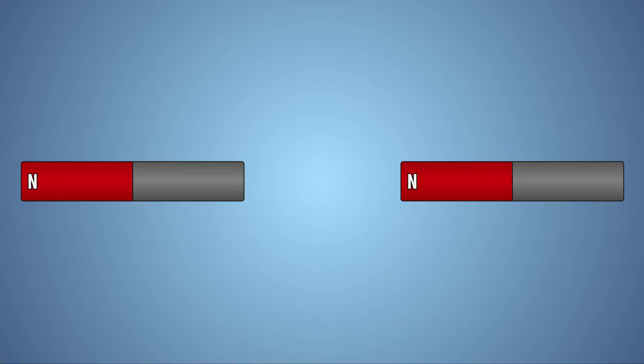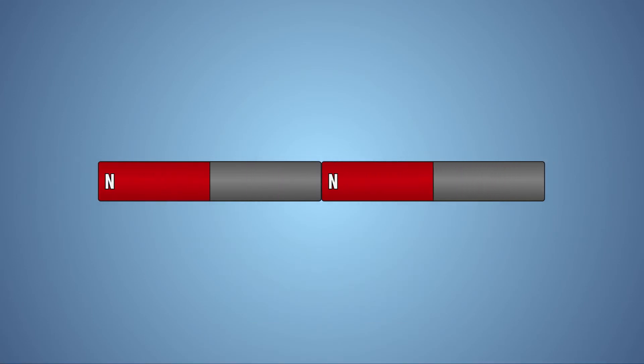If you hold two magnets with opposite poles facing each other, the magnets will attract one another. On the other hand, if you put a pair of magnets near each other with two of the same poles facing each other, the magnets will repel one another.